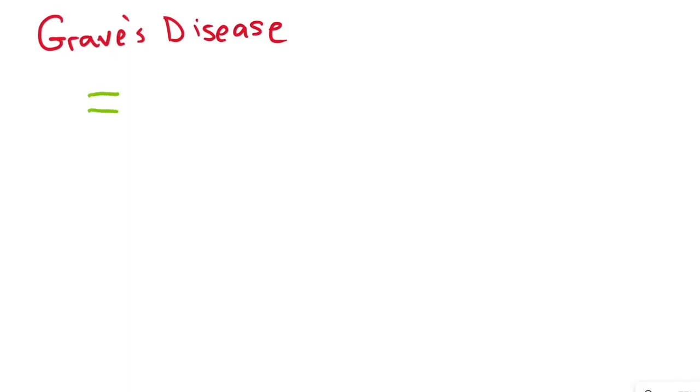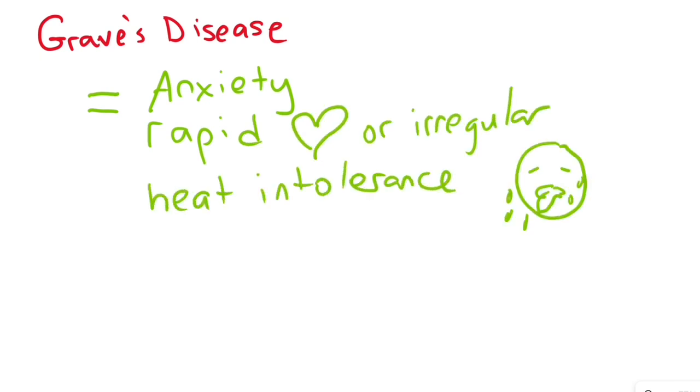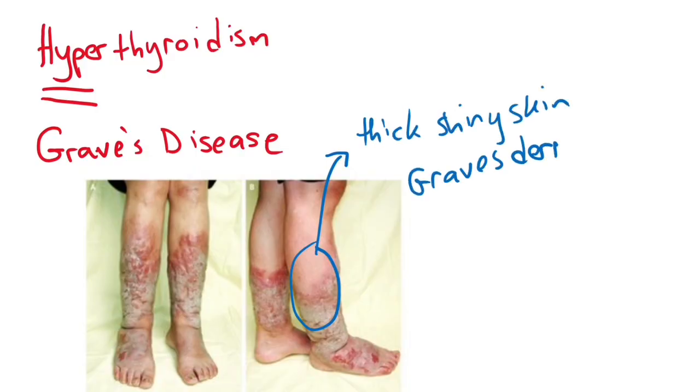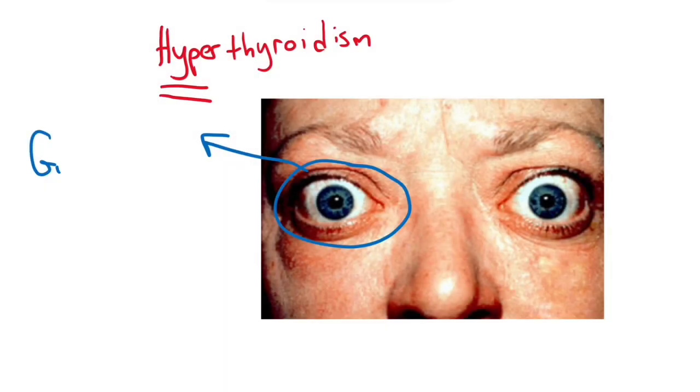Graves' disease can lead to increase in thyroid function leading to anxiety, rapid or irregular heart rate, heat intolerance, weight loss, thinning hair, decreased libido, diarrhea, thick and shiny skin called Graves dermopathy or also called pre-tibial myxedema, and exophthalmos.